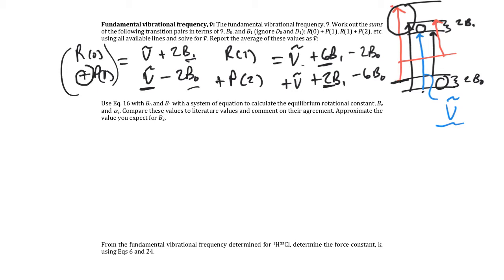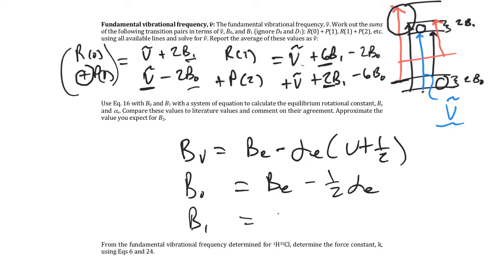So the equation 16 was the connection between BE and alpha E. That was the equation that BE is equal to BE minus alpha E. And so if you have an equation you can write out for B0, an equation you can write out for B1, where B0 would be BE minus half alpha E. And then B1 would be equal to BE minus three halves alpha E. Then you have yourself system of equations that you can solve for BE and alpha E. So two equations, two unknowns. You can solve for those accordingly.